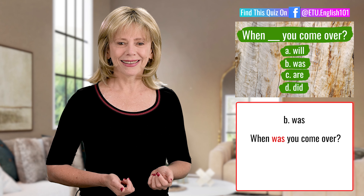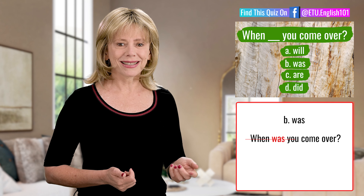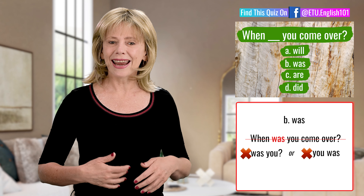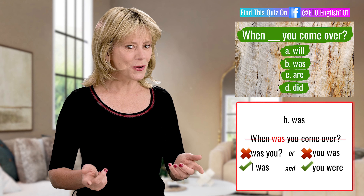Choice B: was. This gives us the question, 'When was you come over?' When was you come over isn't right. We don't say 'was you' or 'you was.' In English, we say 'I was' and 'you were,' or 'was I?' and 'were you?'